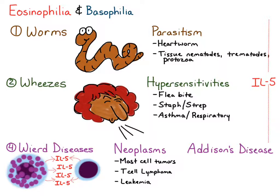Addison's disease is different in that it's a deficiency of cortisol that actually causes the eosinophilia. Also, most of these causes can cause eosinophilia and basophilia, except Addison's tends to only cause an eosinophilia — it does not have an association with a basophilia.